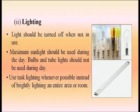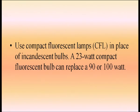Increasing energy demand worldwide and ever-rising energy prices provide strong justification for improving energy efficiency. For lighting: turn lights off when not in use; maximize sunlight during the day; avoid using bulbs and tube lights during daytime; use task lighting instead of brightly lighting an entire room. Use compact fluorescent lamps (CFL) in place of tungsten/incandescent bulbs — a 23-watt CFL can replace a 90 to 100-watt bulb. Use dim lights in galleries, lobbies, and balconies. Do not keep computers, TVs, tape recorders, or music systems in standby mode.